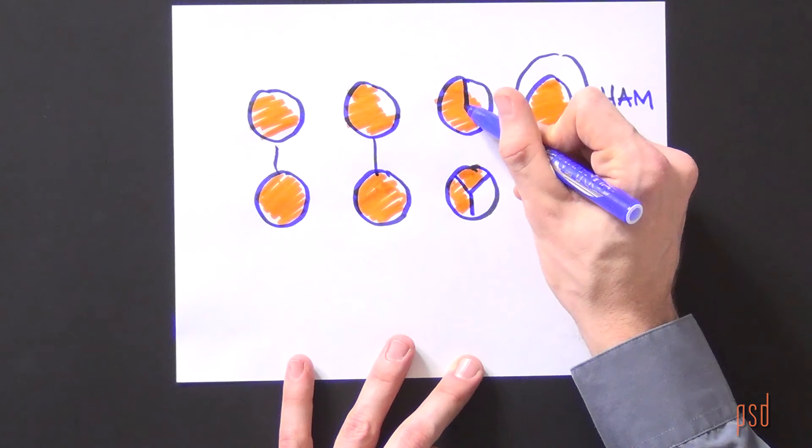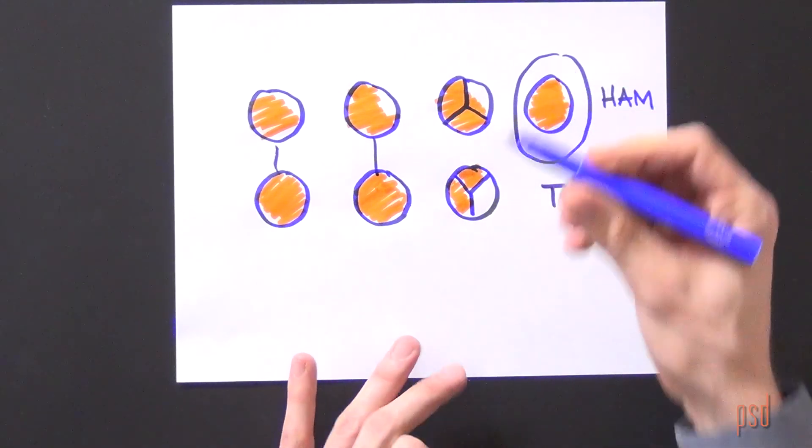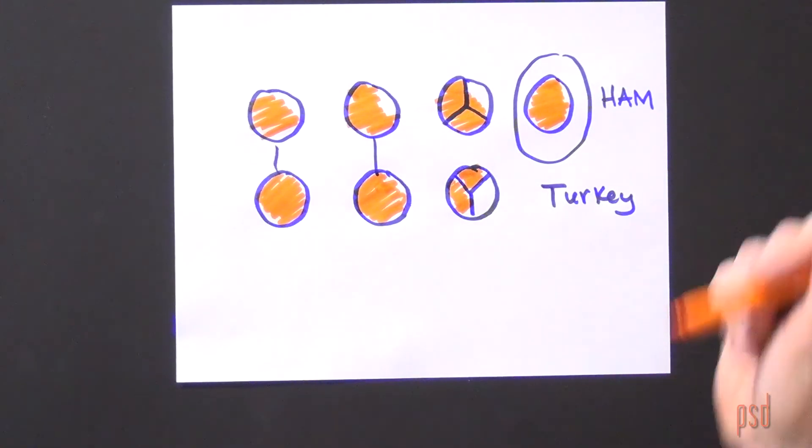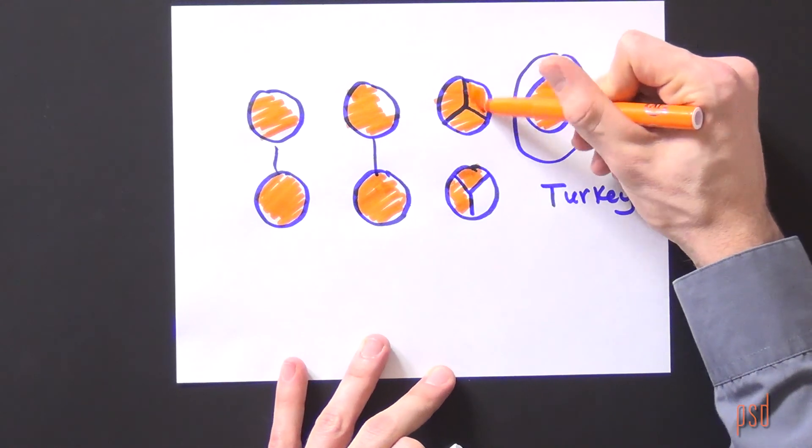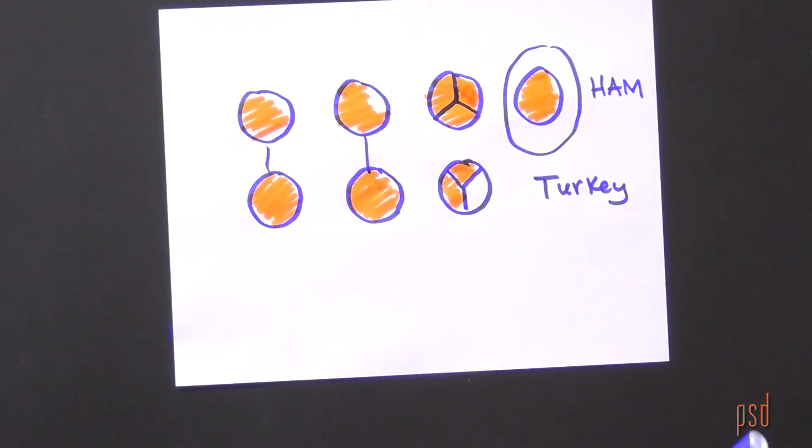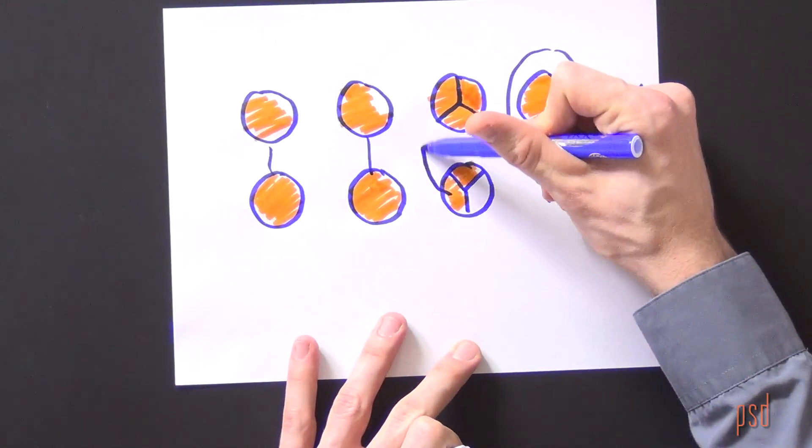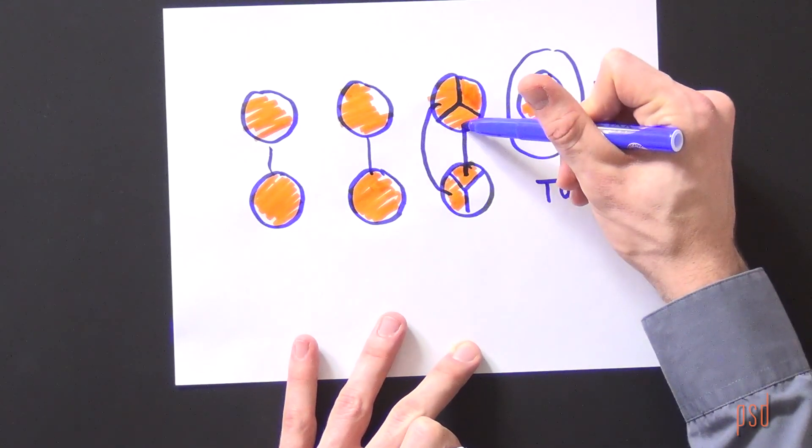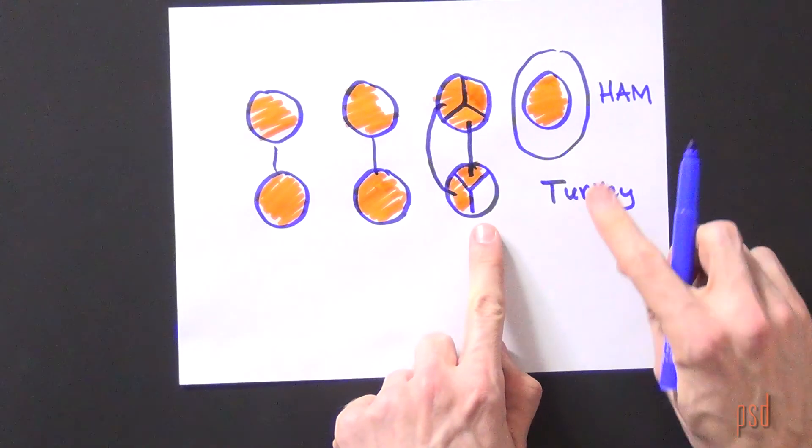If I partition this into thirds as well, and I know that each of those is shaded, so I'm going to shade that a little better. I can see that this third and this third go together, and this third and this third go together. So I can see that she has 1 and 1 third more pounds of ham than turkey.